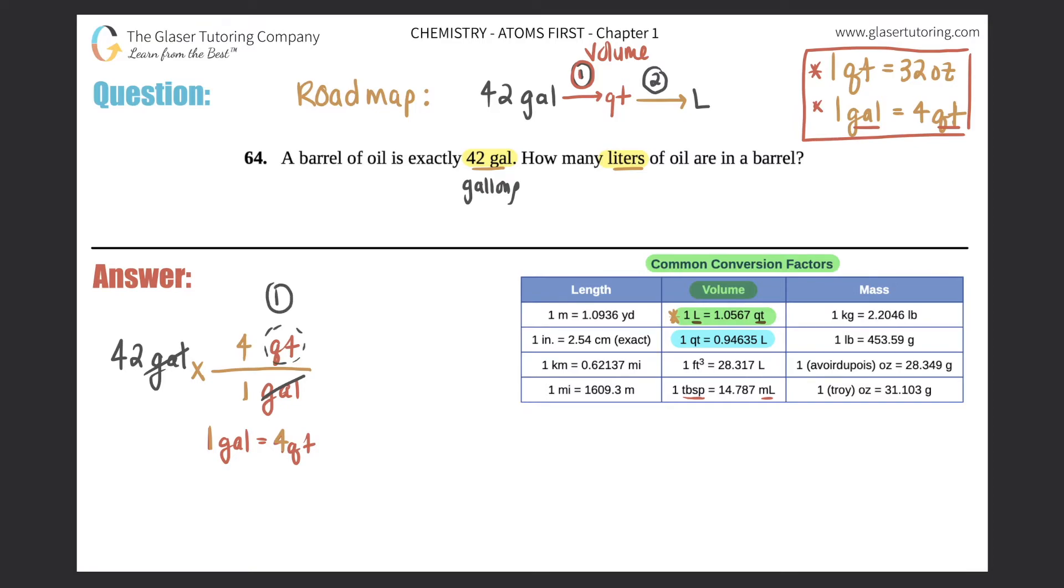Now we just do the same process over again. You multiply by a ratio, and this is the start of step number two. You don't want quarts anymore, so that has to go on the bottom, and we're looking for liters, so liters go on the top.